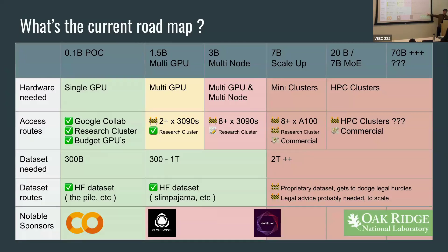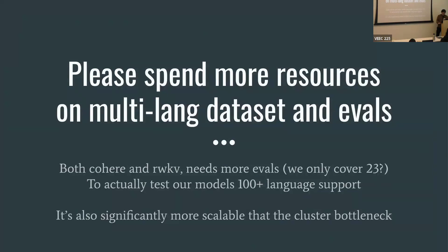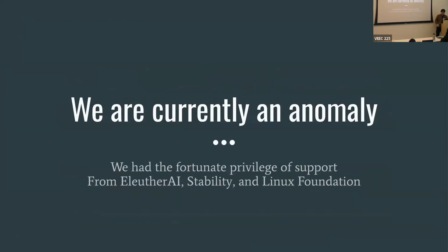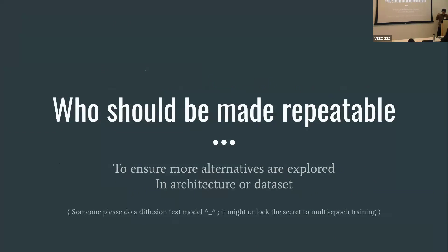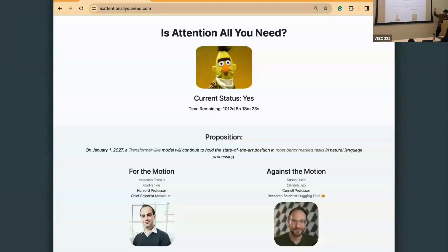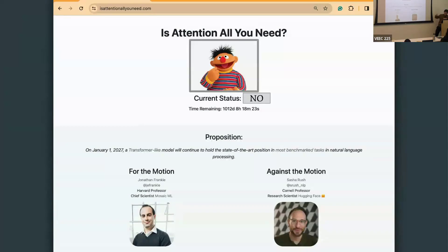I consider us lucky because we actually get to consult lawyers for legal advice — most open source groups have no access to that. Please spend more resources on multilingual datasets and evals; it's more scalable than GPUs. We are currently an anomaly: by some weird coincidence, we managed to get support from both EleutherAI, StabilityAI, and the Linux Foundation. Most open source groups starting with a new architecture are lucky to get support from one of them, and we need to figure out how to provide more support for them. This process should be made repeatable because we want to ensure more architectures are explored. I want to figure out how to unlock multi-epoch training for text models — because we need all of that if attention is not all you need. We are one proof point, but I think there need to be more. Thanks a lot.